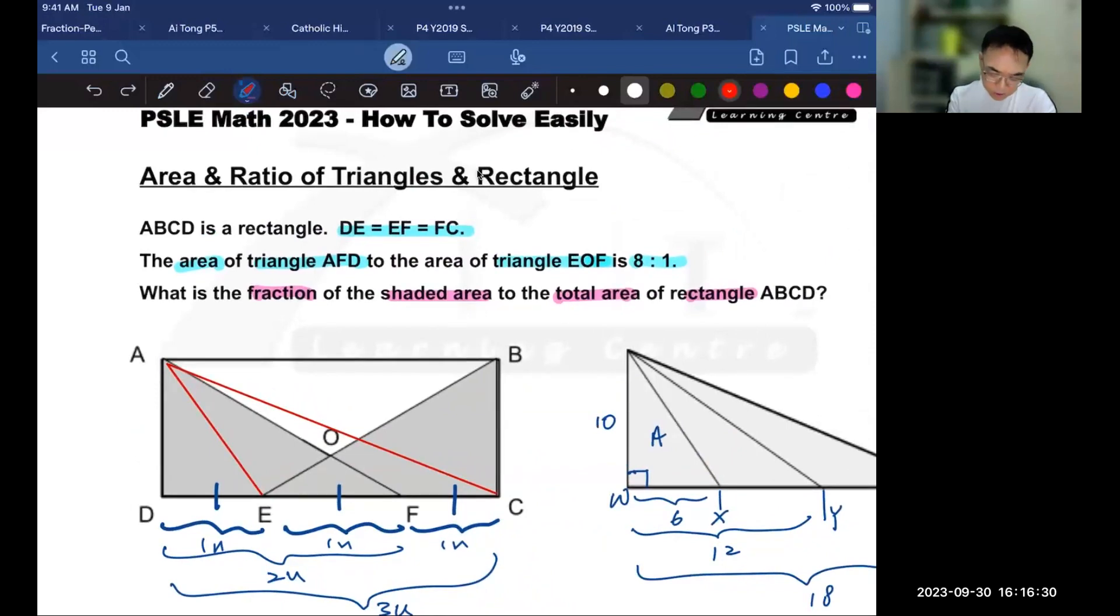Now the information given in the question is that the area of triangle AFD to EOF is 8 to 1. Once again, AFD is here and EOF is here. So if the red triangle is eight units and the blue triangle is one unit, we now know that this area would be seven units and this would be one, because the total is eight. So let's do that. Let's write that in. So here we got seven units, here we got one unit, and here we also have seven units.